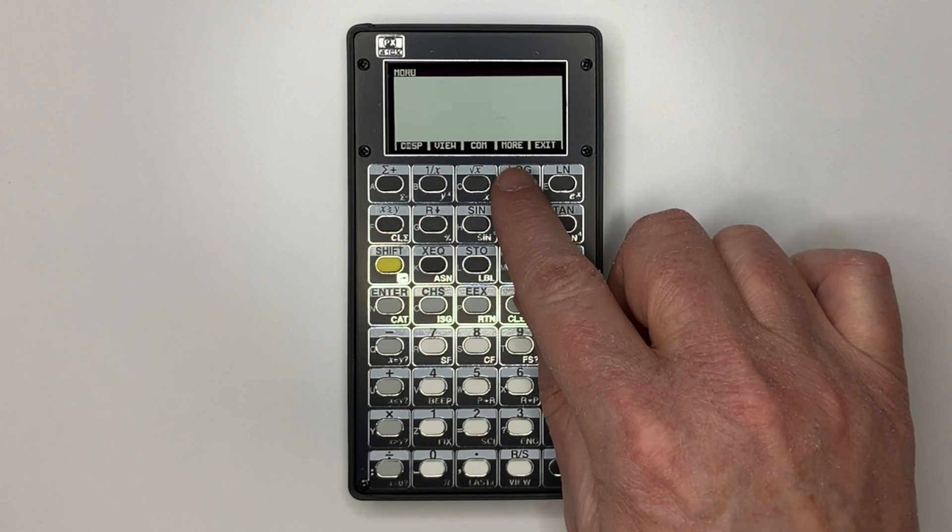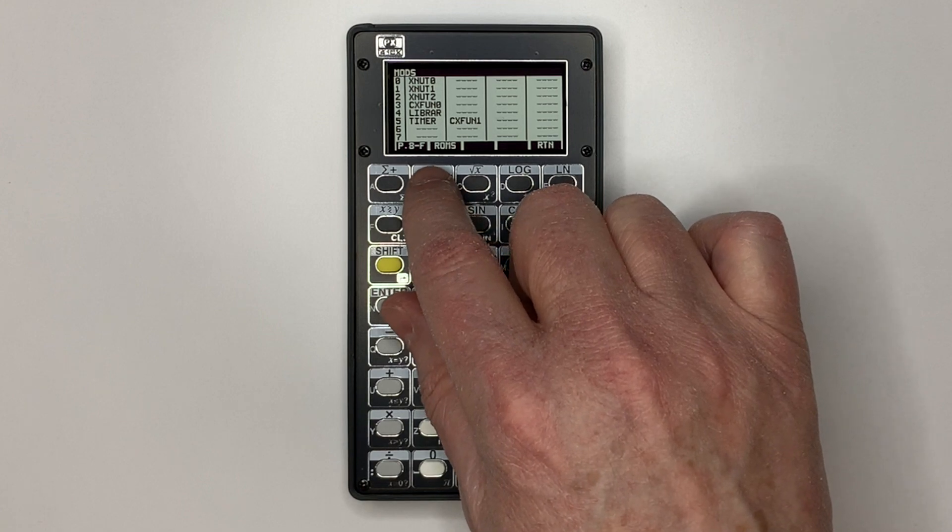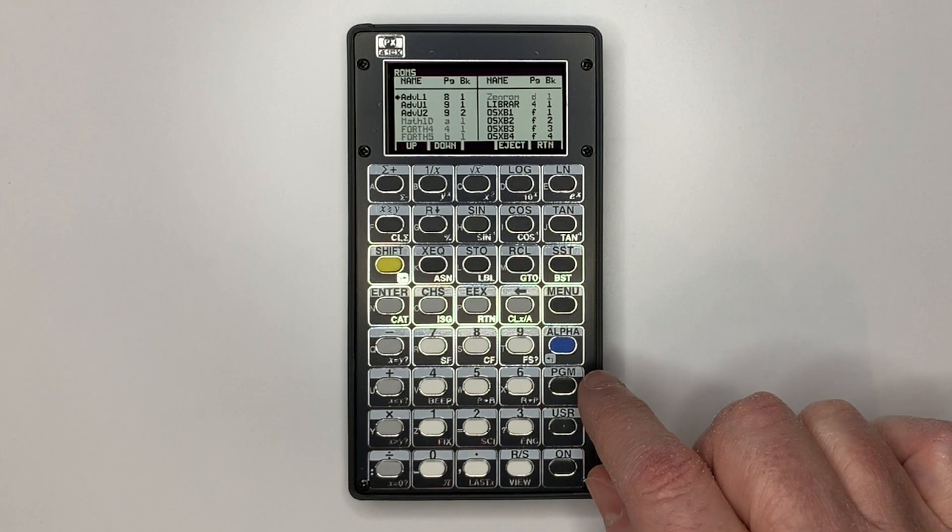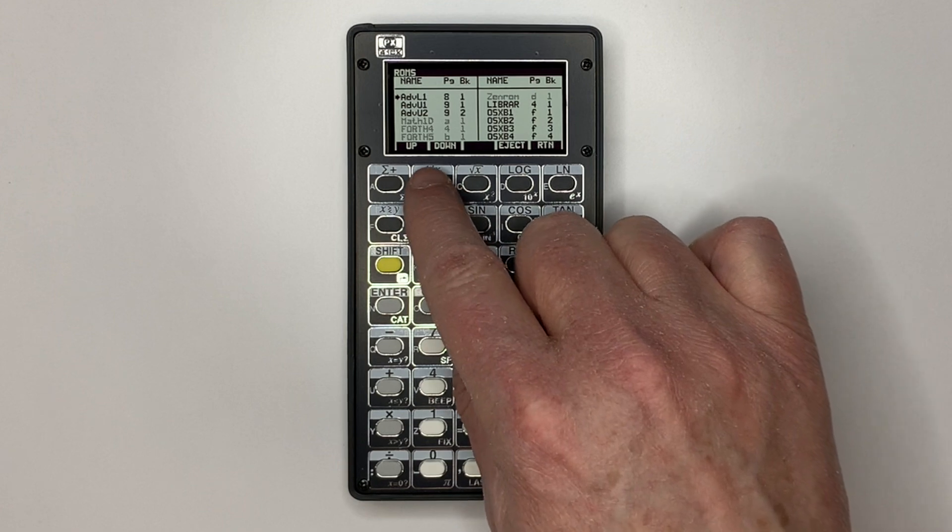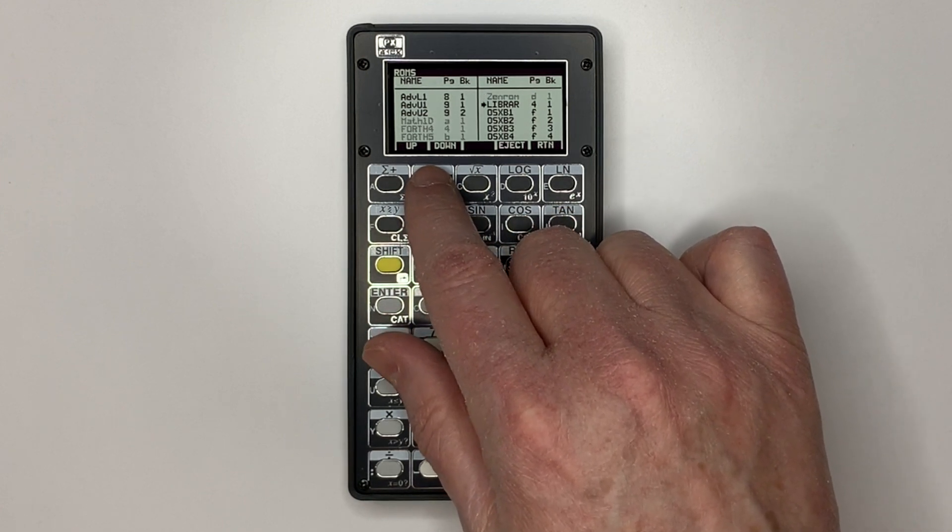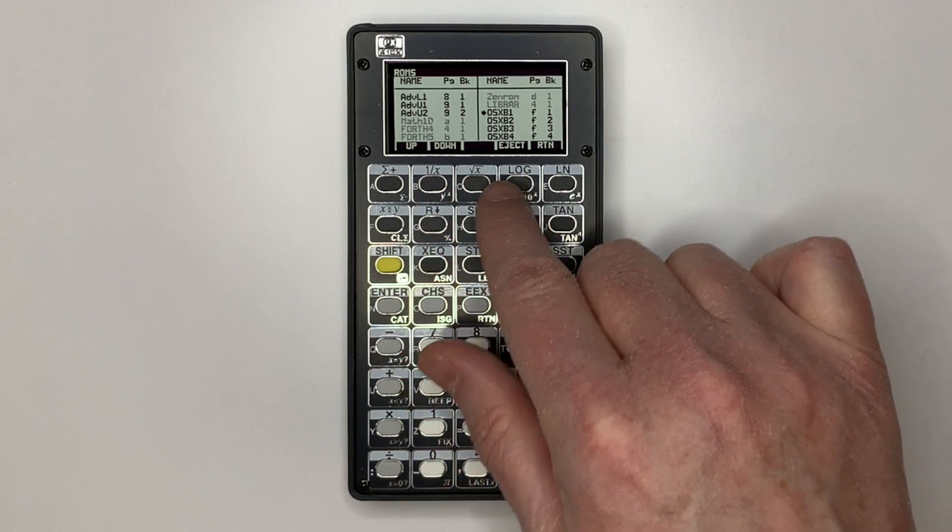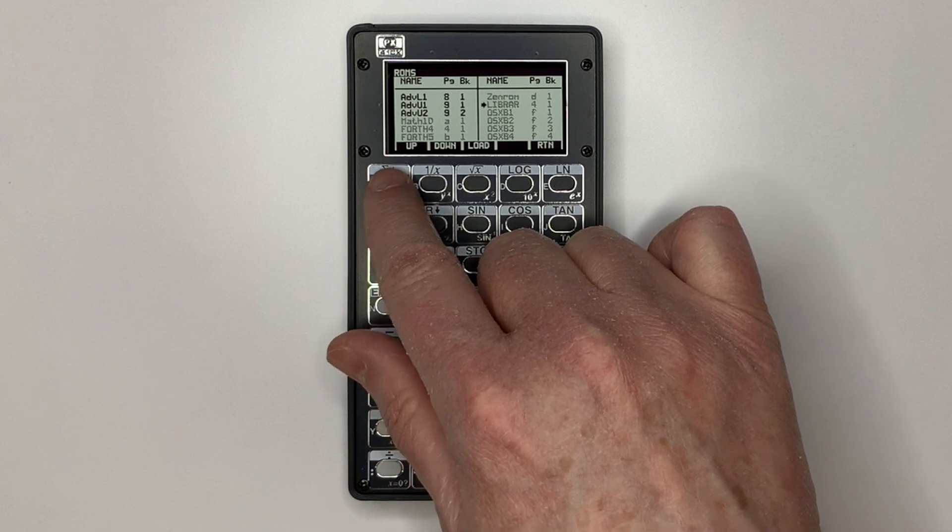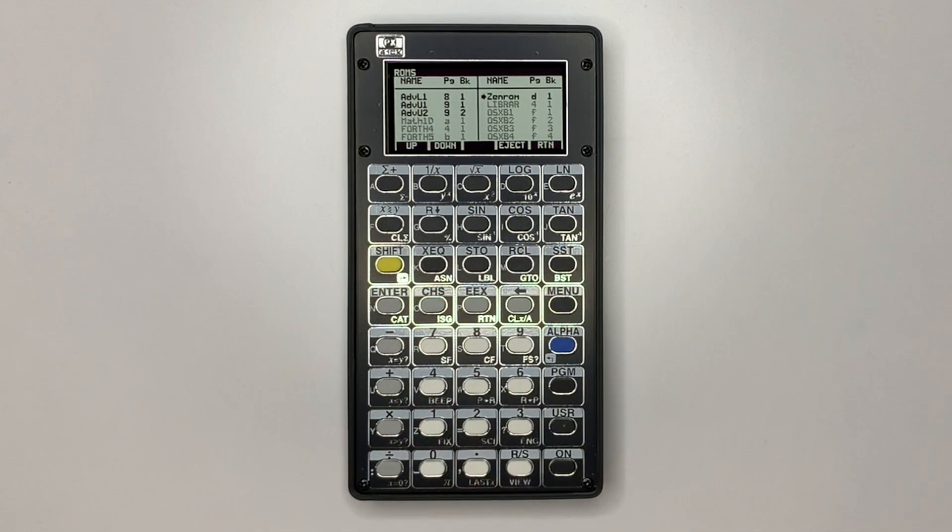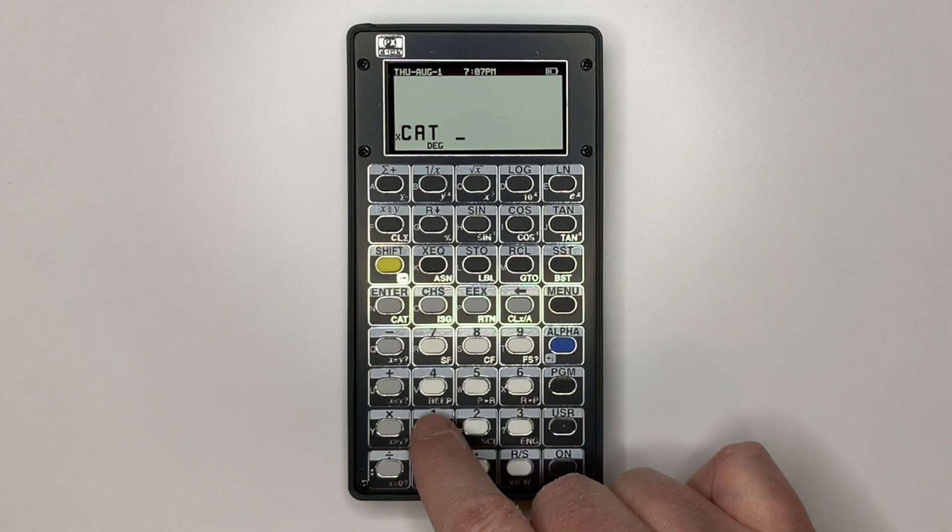Now let's change the modules. We'll remove OSX by ejecting Library 4 and ejecting OSX, then load ZenROM. After changing modules, you need to power cycle. Then the new modules will be active.